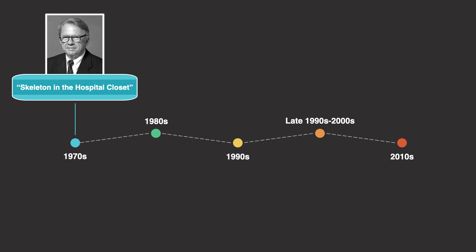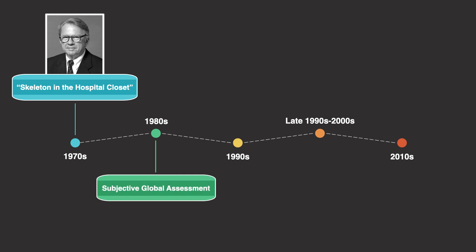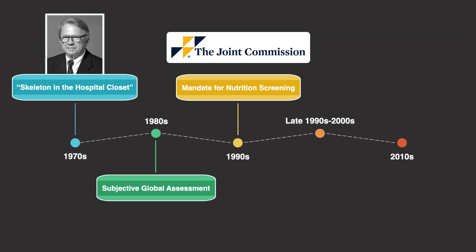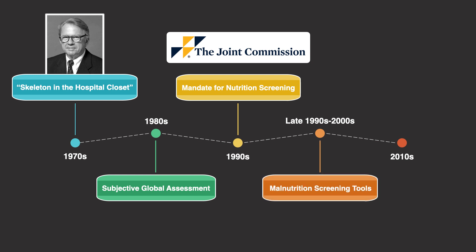Since then, major steps have been taken to identify patients who are at risk of malnutrition as well as those who already have it. In the 1980s, the Subjective Global Assessment was created. This tool uses data collected during the nutrition assessment to classify patients as either well-nourished, moderately malnourished, or severely malnourished, and is widely recognized as being both valid and reliable. Then in 1996, a mandate for nutrition screening was made by the Joint Commission, which provides accreditation to hospitals in the United States. It requires that all hospitalized patients undergo a nutrition screening process within the first 24 hours of admission so that those who require specialized nutrition care will receive it. To streamline this process, a number of screening tools were produced in the late 1990s and early 2000s.